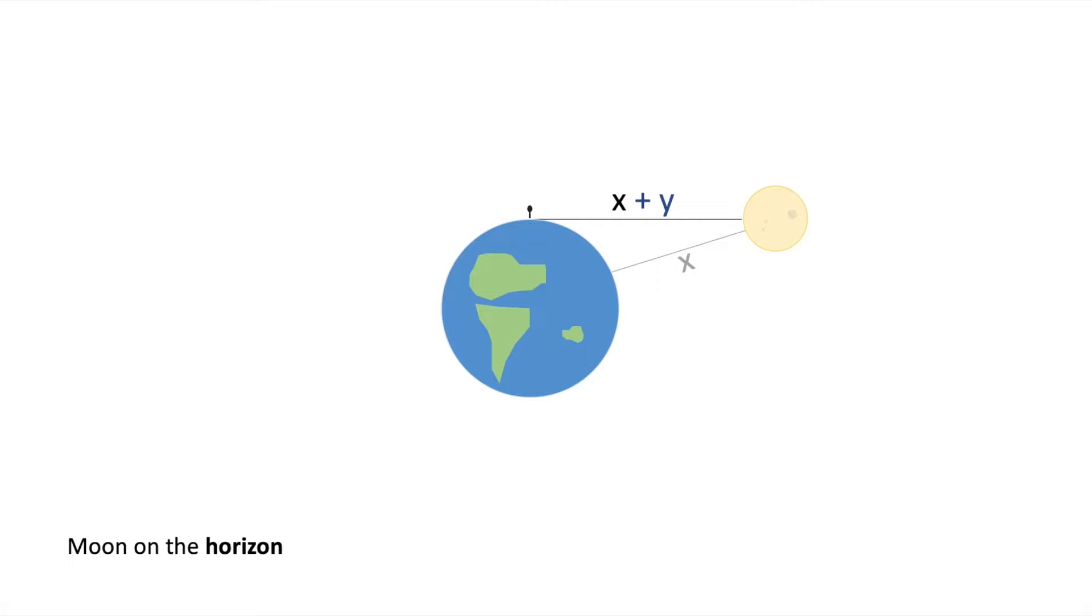In this image here we have a moon on the horizon scenario. The distance between us and the moon is actually larger here. We can describe it as x plus y. Doesn't that mean the moon on the horizon should appear smaller since it is further away? It does. But even on photos you can't really measure a significant difference. But how does it come that we see this giant of a moon on the horizon?